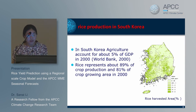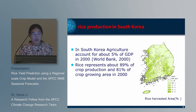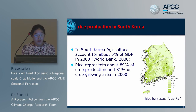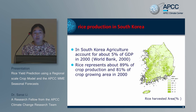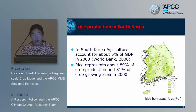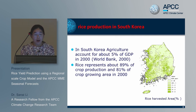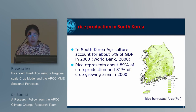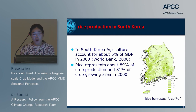In South Korea, agriculture accounted for about 5% of GDP in 2000. Rice yield represents about 29% of crop products and 81% of crop growing area in 2000. Rice is the most important food crop for South Korea. In this study, rice for South Korea was selected as a case study to forecast rice yield.